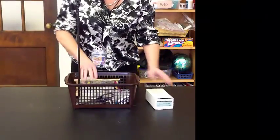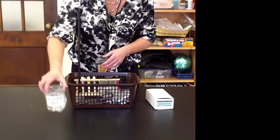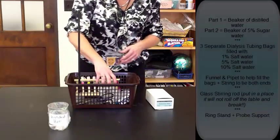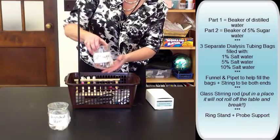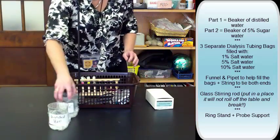For the Diffusion Lab, first you need to unpack your basket, and you're going to have 300 ml of distilled water, already pre-measured, and 300 ml of 5% sugar. We're going to use that for part two, so you can set that aside.